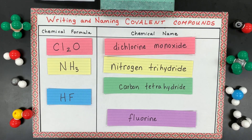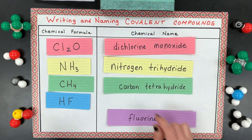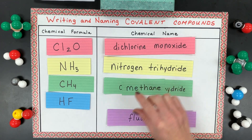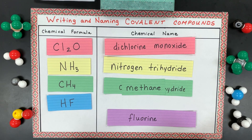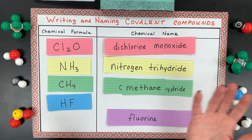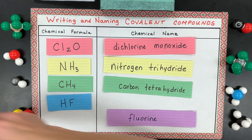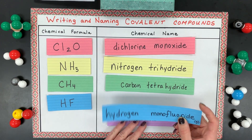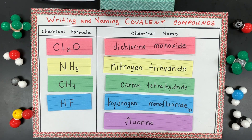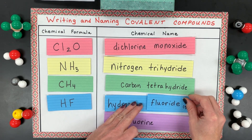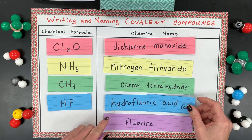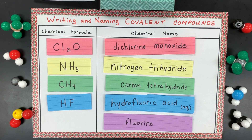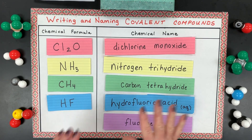Carbon tetrahydride also has a common name — that is methane, which leads into organic chemistry. These are simple covalent molecules, so we don't name them like organic chemistry molecules here. The next one, if it's a gas, is named hydrogen monofluoride, or just hydrogen fluoride. However, if you dissolve it in water, it turns into an acid — a binary acid called hydrofluoric acid.